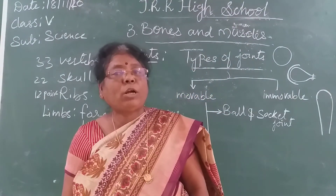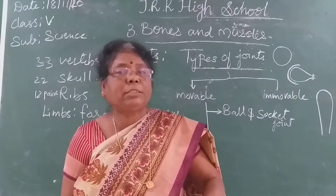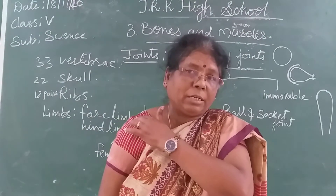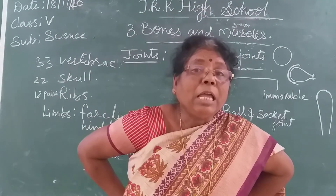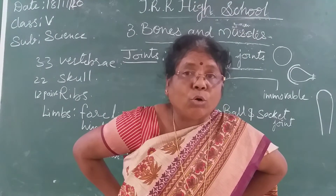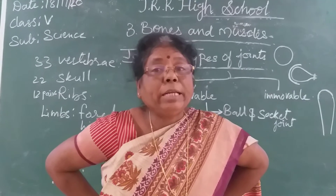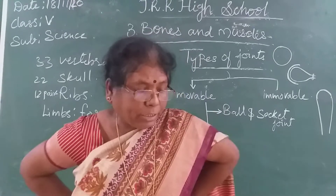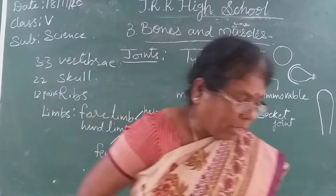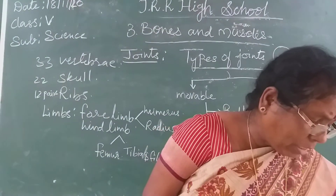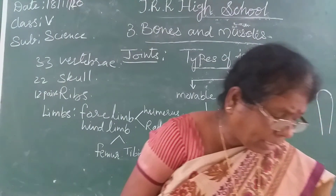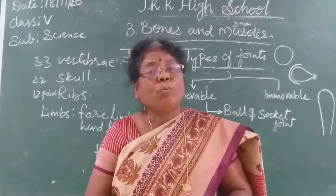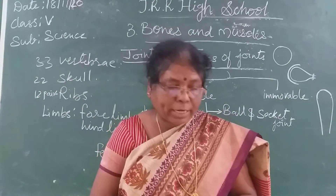Where do you find the ball and socket joint in your body? In the shoulder and in the hip bone, you find the ball and socket joint.